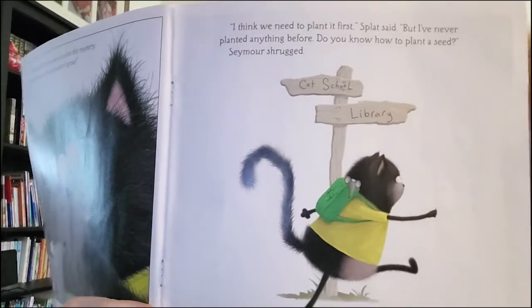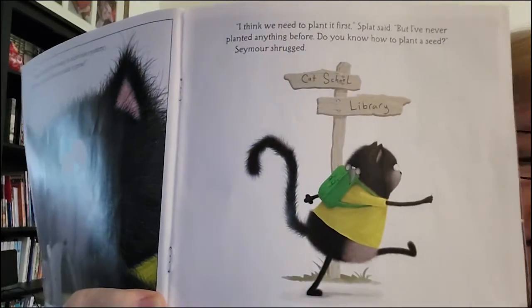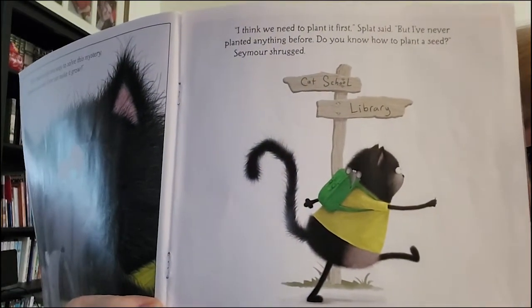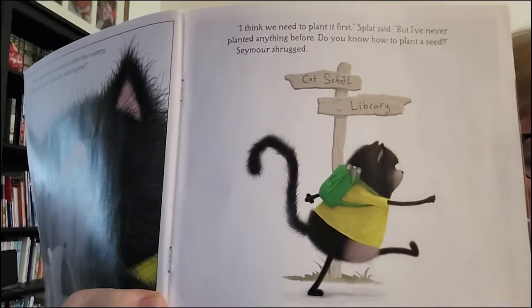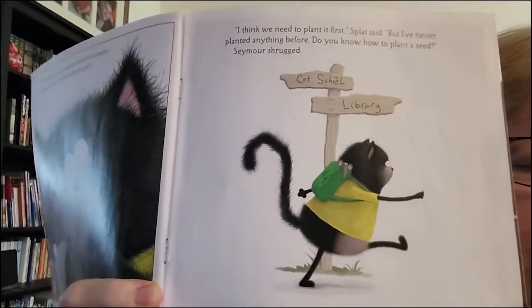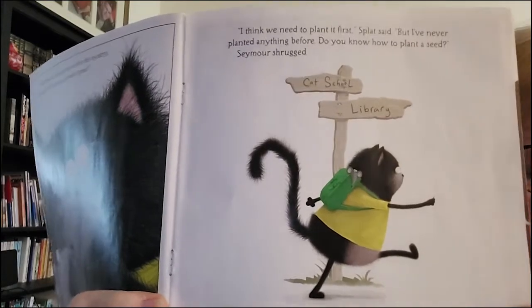I think we need to plant it first, Splat said, but I've never planted anything before. Do you know how to plant a seed? Seymour shrugged again. Okay, then let's go to the library to find out, announced Splat.